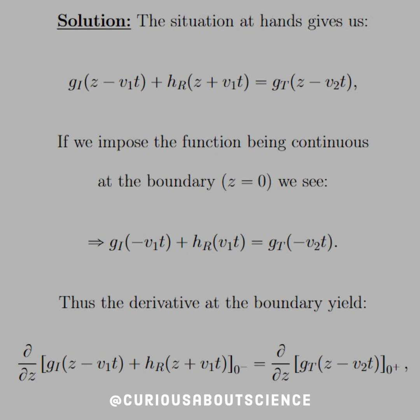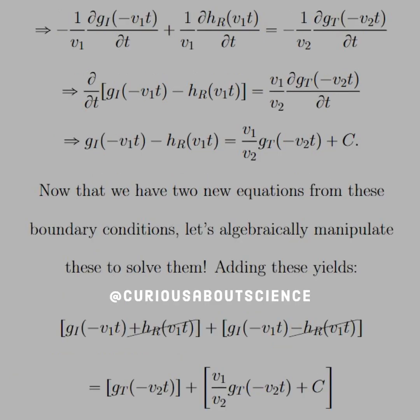Thus the derivatives at the boundary yield, and we need to evaluate the same thing at zero from the left and zero from the right. Let's go ahead and take that. We see we get a factor of negative one over v_1 and with the time derivative, plus one over v_1 with the time derivative, equal to negative one over v_2 with the time derivative of g_T. Push that all through.